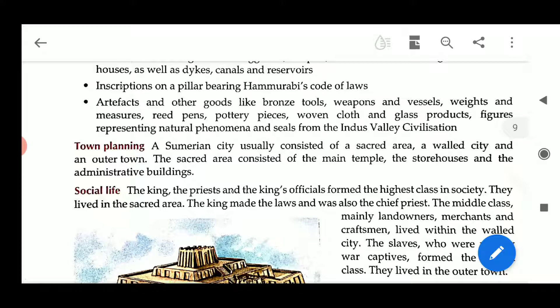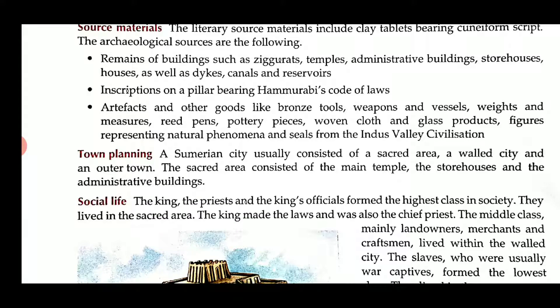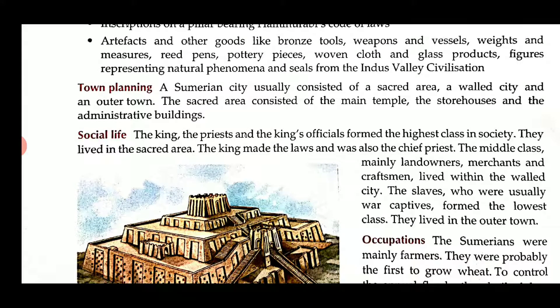What was the social life of this city? The king, the priests and the king's officials formed the highest class of society. They lived in the sacred area. The king made the law and was also the chief priest. The middle class — mainly landowners, merchants and craftsmen — lived in the walled city. The slaves, who were usually war captives, were from the lowest class and lived in the outer quarter town.